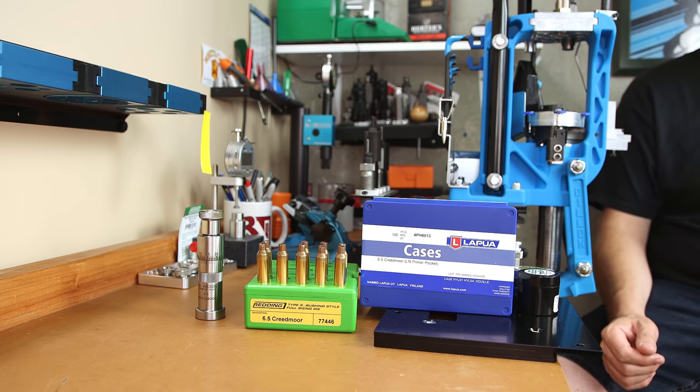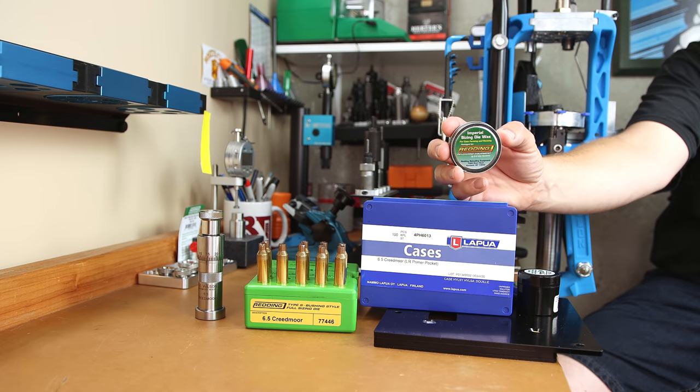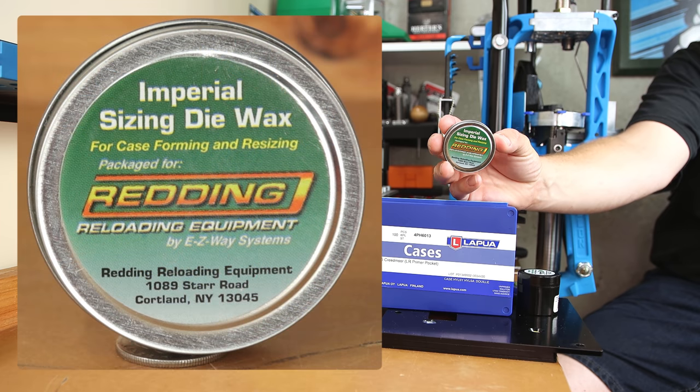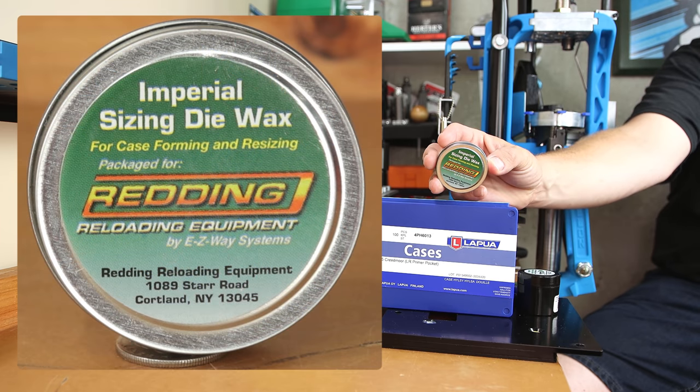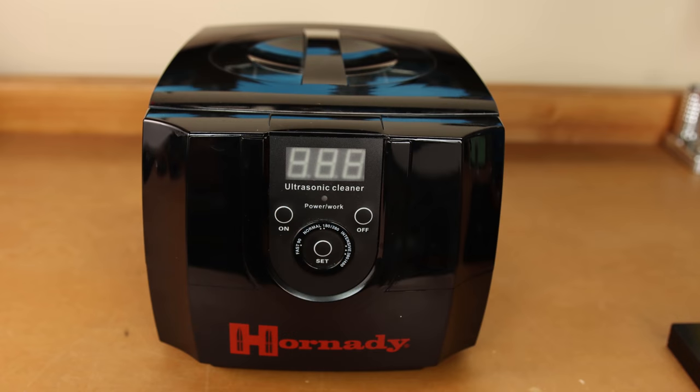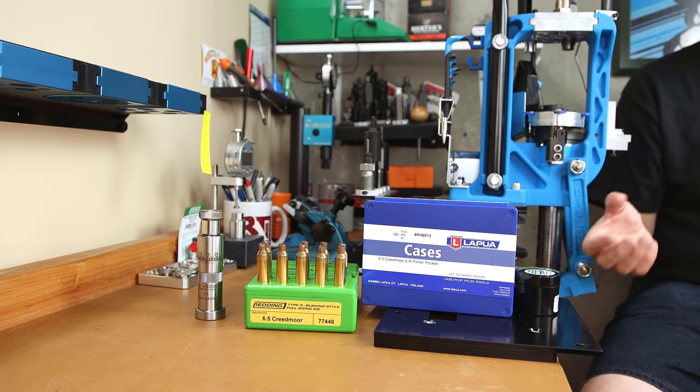Please keep in mind for all these options, that if we use just an expander mandrel, we're only using dry neck lube to do the sizing. For any steps, like the full length die or any of the bushing dies, we used imperial sizing wax to do the sizing. The lube was wiped off after the sizing had taken place and then placed in an ultrasonic cleaner to remove any of the remaining case lube. Now that we've went over all the different options, let's start looking at some of these charts to see what we can learn.